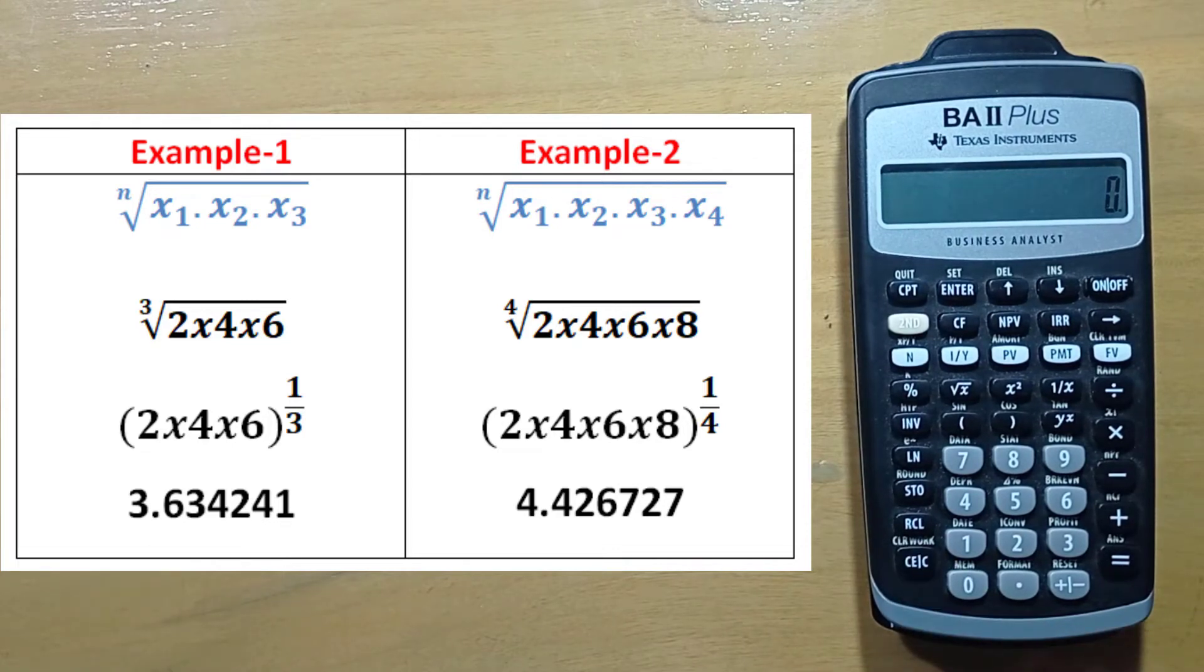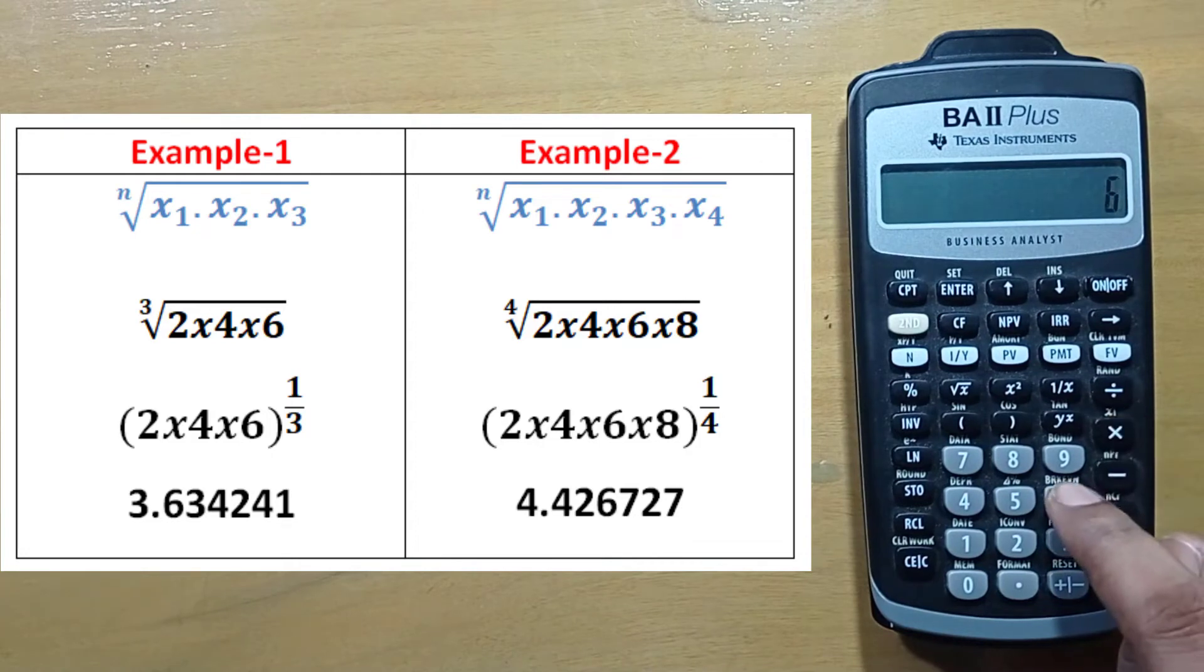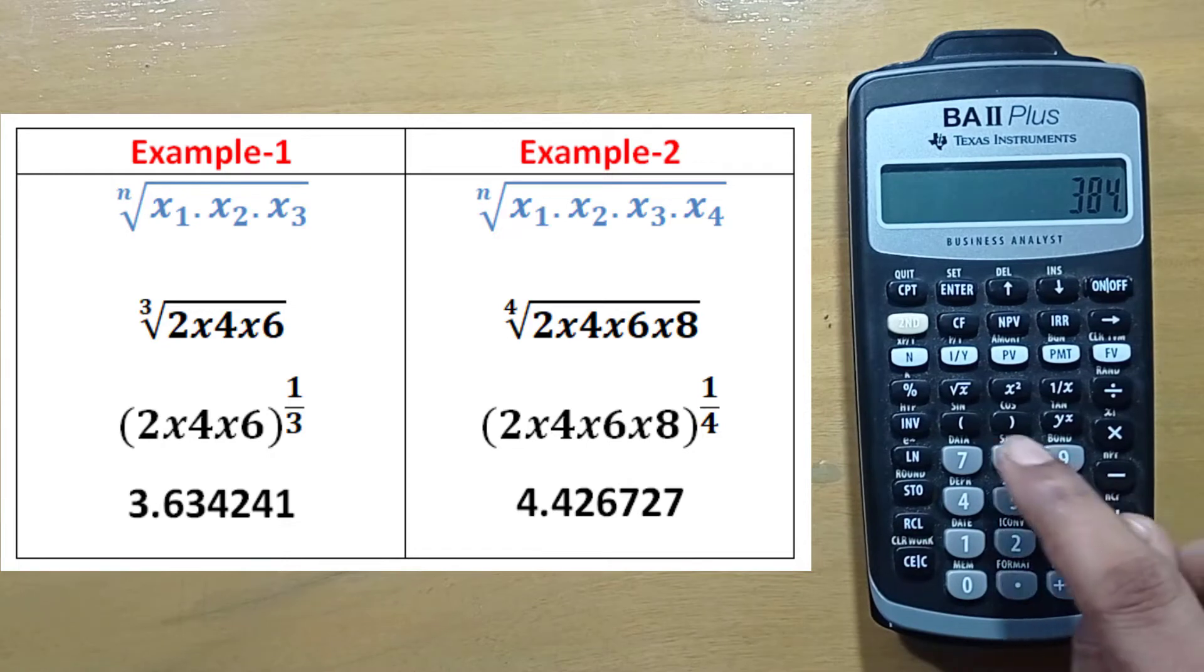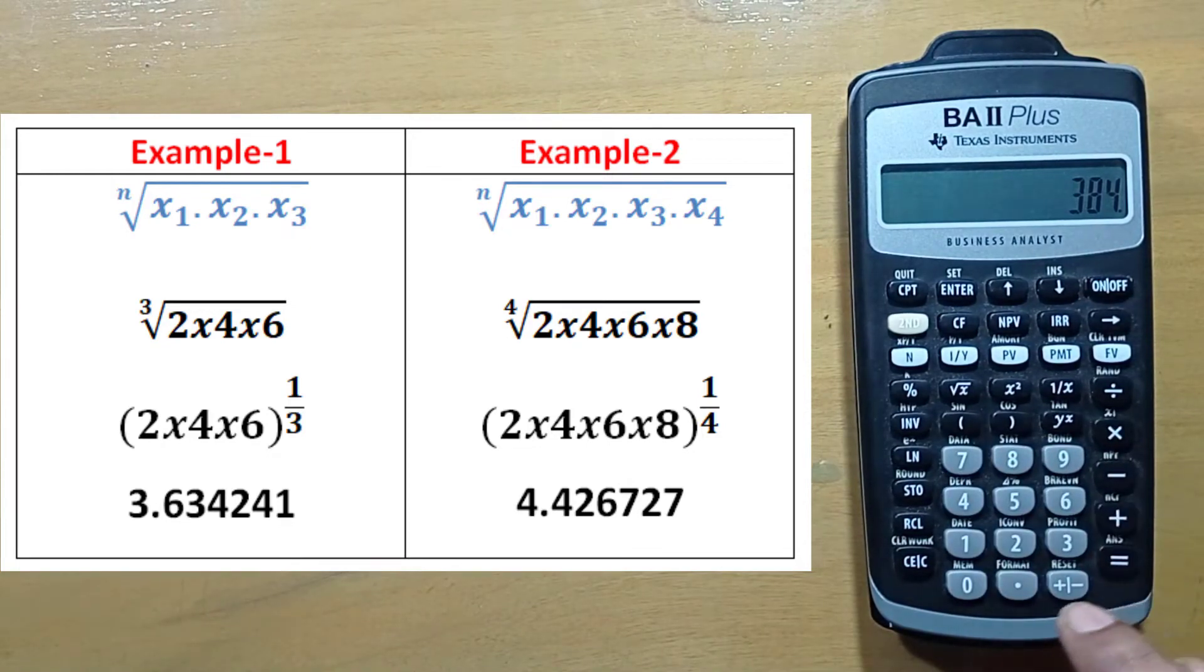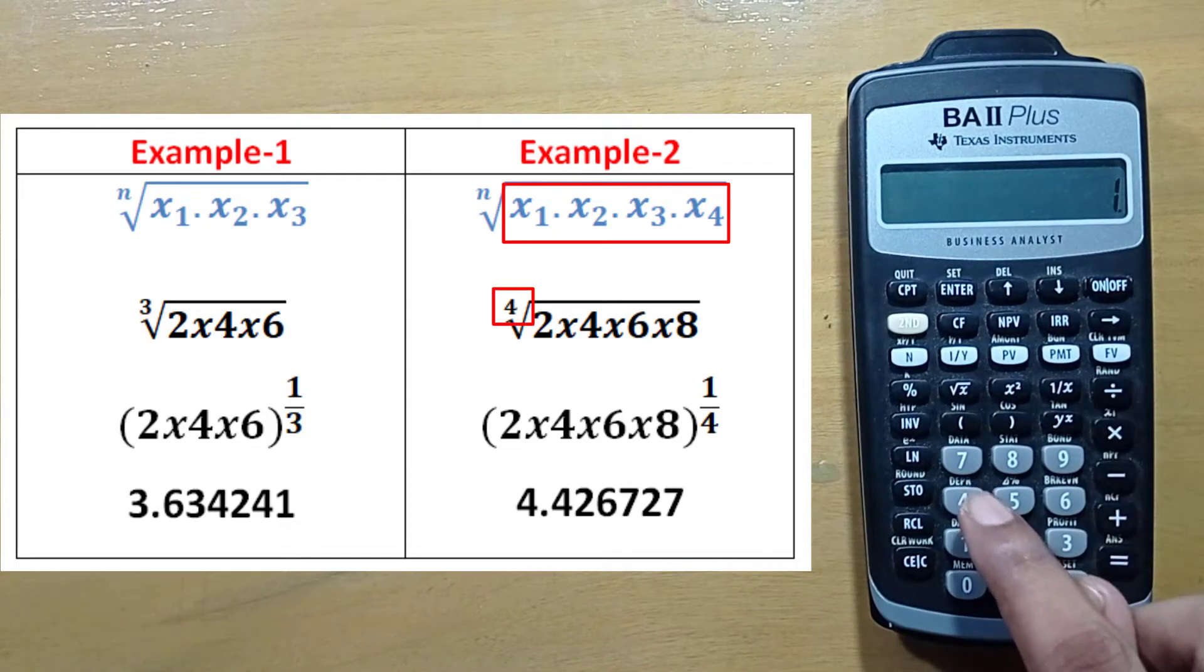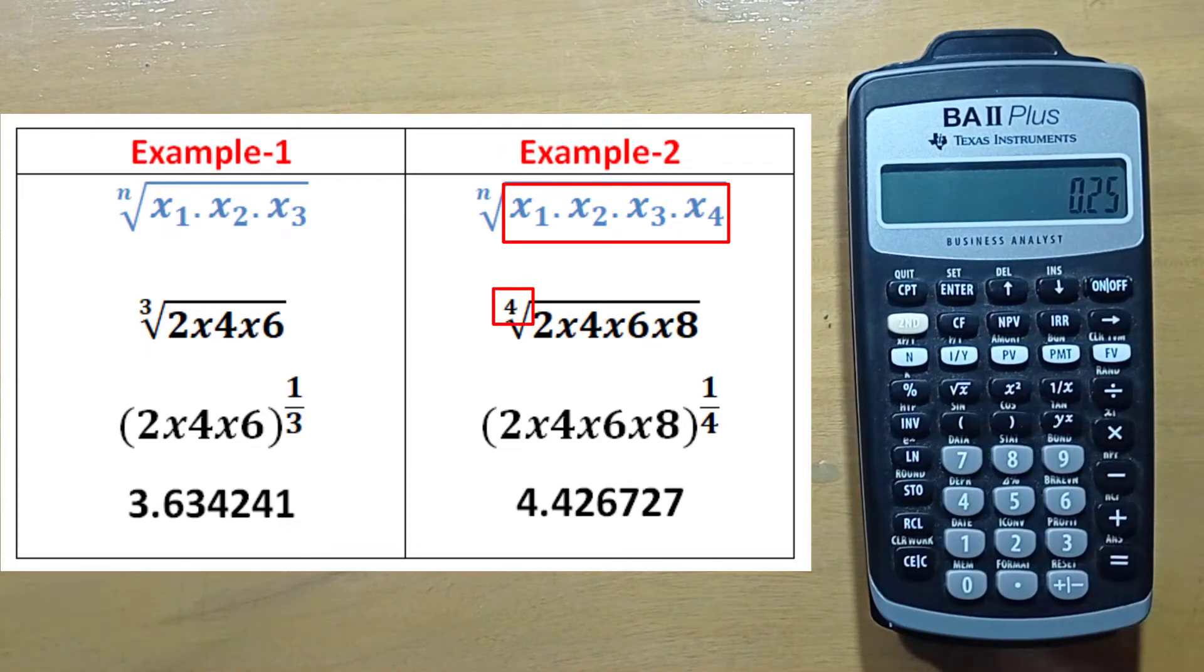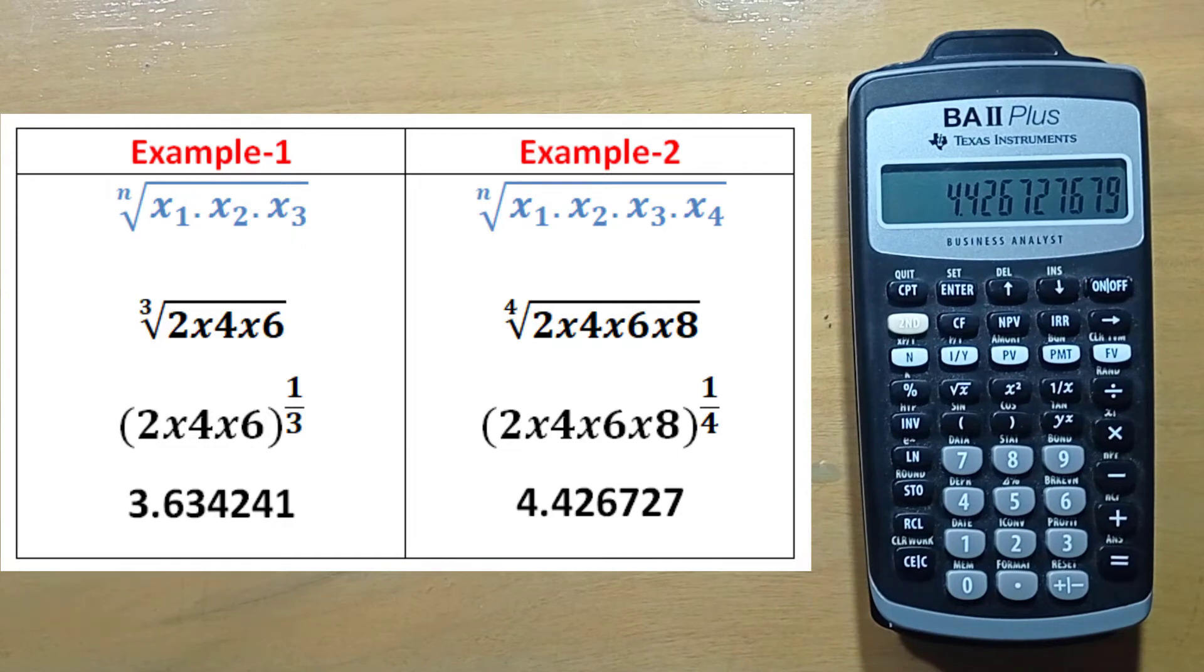Same way we can also calculate the result of example 2, which is 2 into 4 into 6 into 8. Here we have 4 variables, so 1 divided by 4 in bracket, press equal sign. So we have our result for this geometric mean. And this is how you can easily calculate geometric mean by using this TI BA Plus calculator.